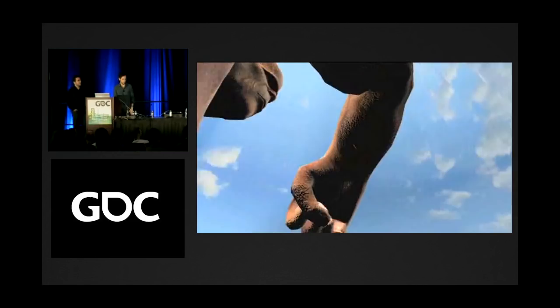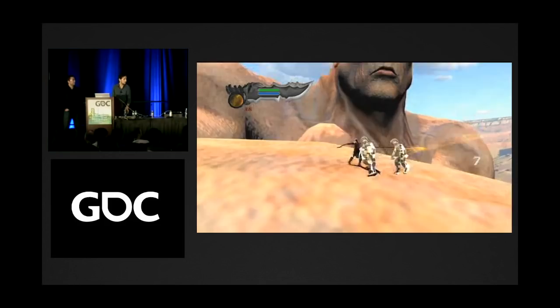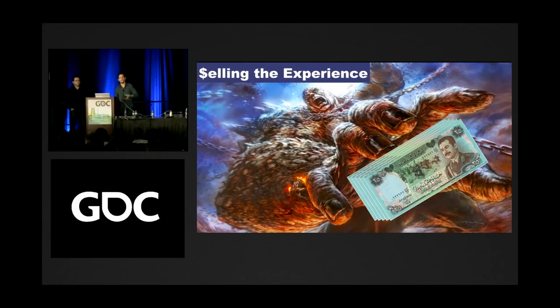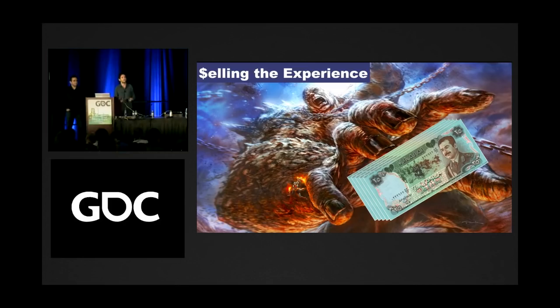This video showcases the combination of three months of research and development — we had an actual model in an environment, Kratos fighting enemies, he wasn't completely falling off, and some rough animation blocked in. The mandate from game director Stig was clear: this thing needs to be alive. We have to bring it to life. If it doesn't feel alive, we're totally screwed.